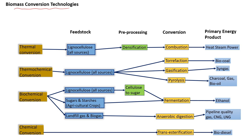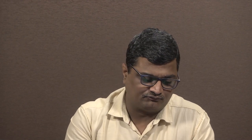Looking at the biomass conversion technologies chart, there are 4 types of conversion technologies currently available that may result in specific energy and potential renewable products. These 4 technologies include thermal conversion, thermochemical conversion, biochemical conversion, and chemical conversion.